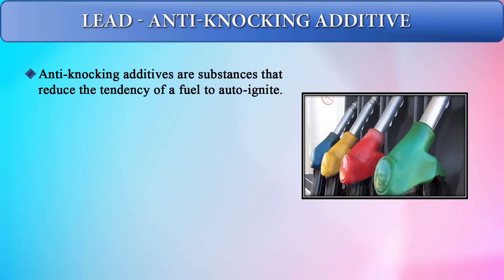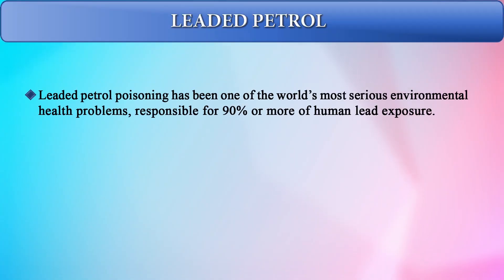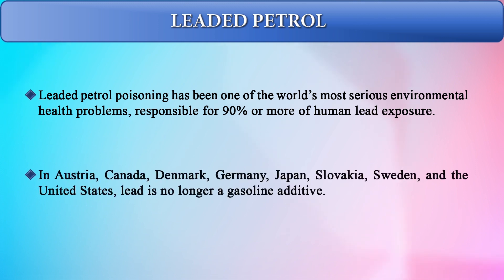Lead is being phased out in several countries and is no longer used in toys and certain other manufacturing equipment. Lead was also used as an anti-knocking additive — specifically tetra ethyl lead — in gasoline to reduce the tendency of fuel to auto-ignite. Leaded petrol was responsible for 90% or more of human lead exposure and has been one of the world's most serious environmental health problems. Fortunately, countries including Austria, Canada, Denmark, Germany, Japan, Slovakia, Sweden, and the United States have now banned lead as a gasoline additive.